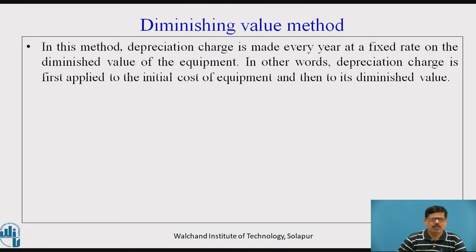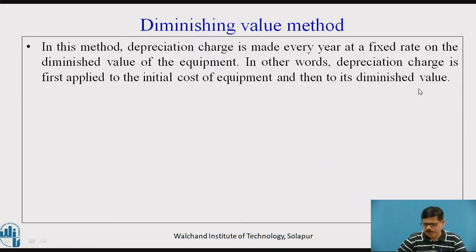Now let us come to the diminishing value method. In this method, the depreciation charge is made every year at a fixed rate on the diminishing value of the equipment. It is also called the reducing balance method. In other words, the depreciation charge is first applied to the initial cost of the equipment, and then to its reduced or diminished value.